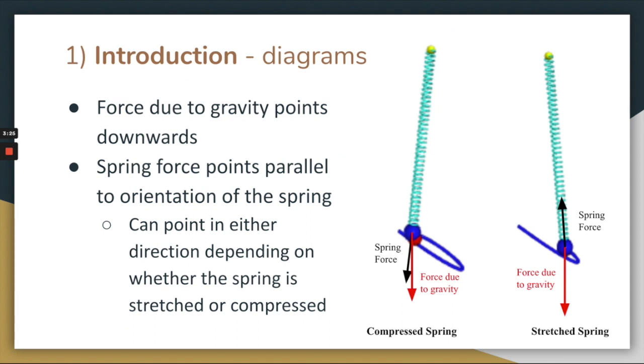Here are two free body diagrams to illustrate the types of motions we'll be seeing in this lab. The force of gravity always points downwards, as seen through the red arrows in the diagrams. The spring force points parallel to the orientation of the spring and can point in either direction depending on whether the spring is compressed or stretched. If the spring is compressed, as in the first diagram, the spring force points away from the attachment point. If the spring is stretched, then the spring force points towards the attachment point, as in the second diagram.